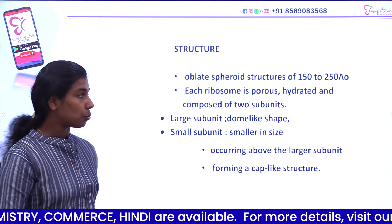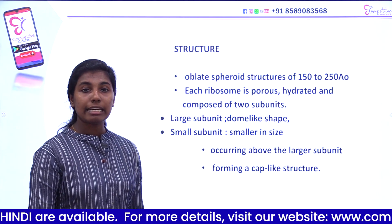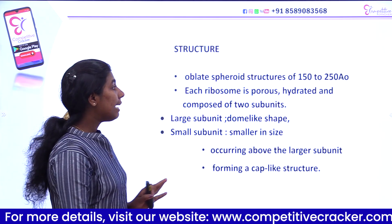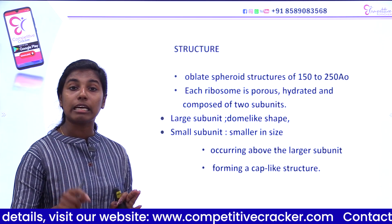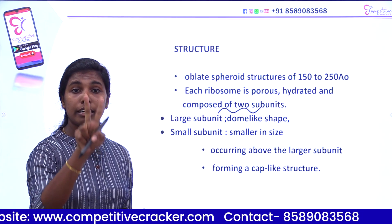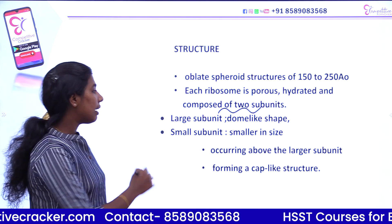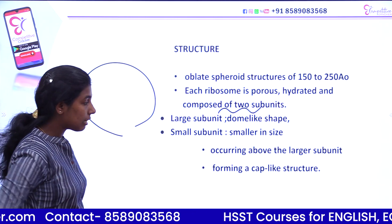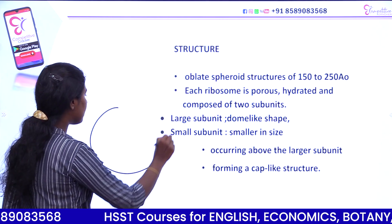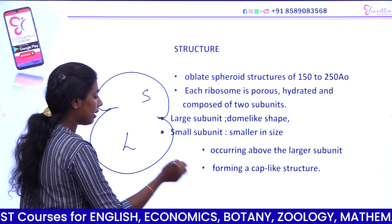Coming to the structure of ribosomes: they have an oblate spheroid structure of 150 to 250 Angstroms — shaped like the earth (flattened sphere). Each ribosome is porous and hydrated. It is composed of two subunits — one larger subunit and one smaller subunit. The larger subunit has a dome-like shape, while the smaller subunit has a cap-like shape.